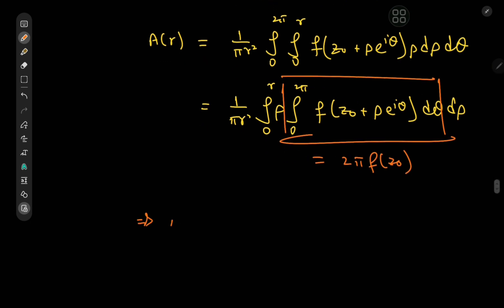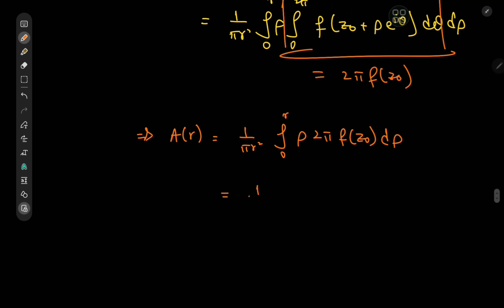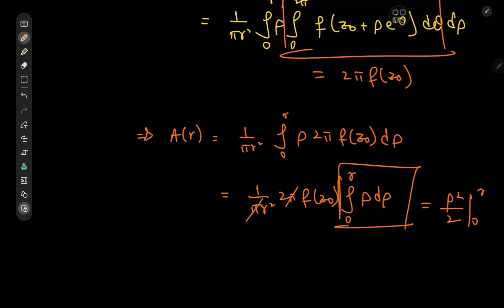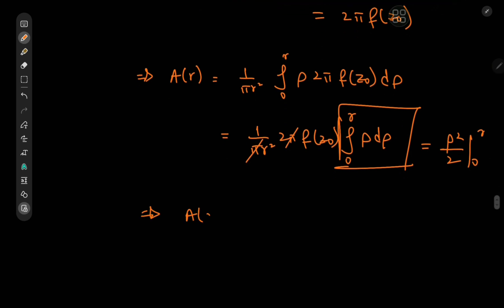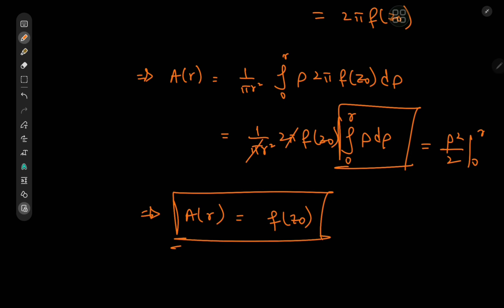Now notice that the integral with respect to theta is exactly the average value of the function times 2pi, and we know from the above theorem that this equals 2pi f of z-naught. So this implies a of r equals 1 over pi r-squared times the integral from 0 to r of rho times 2pi f of z-naught d-rho. Since 2pi f of z-naught is a constant, we take it outside the integral: we have 1 over pi r-squared times 2pi f of z-naught times the integral from 0 to r of rho d-rho, which yields rho-squared over 2 evaluated from 0 to r. After the nice cancellations, the average value equals exactly f of z-naught, which proves this version of the theorem.